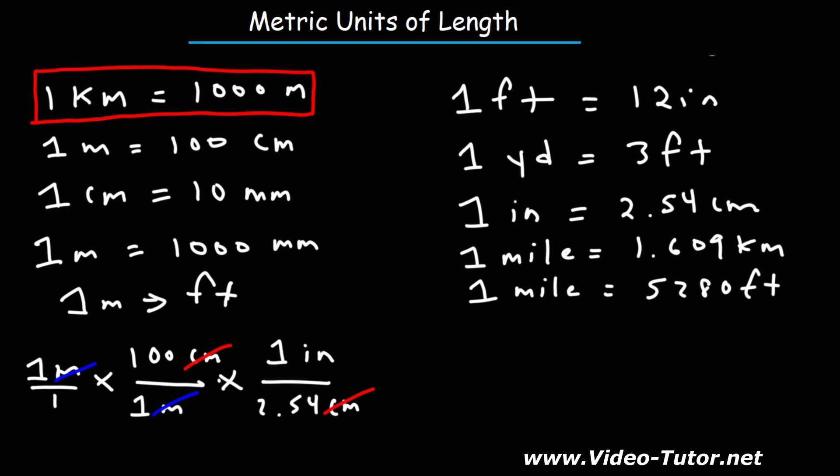Now, for the last conversion factor, which is this one, I'm going to put the 12 inches on the bottom of the last fraction. I'm going to multiply by the numbers on top and divide by the numbers on the bottom. So it's going to be 100 divided by 2.54 divided by 12. So we get 3.2808.